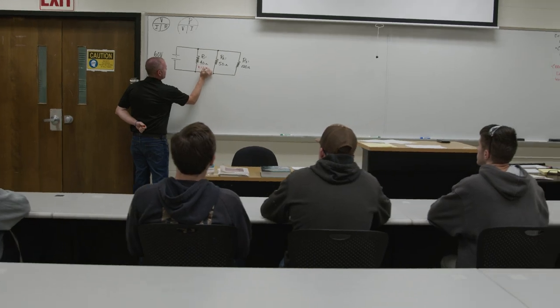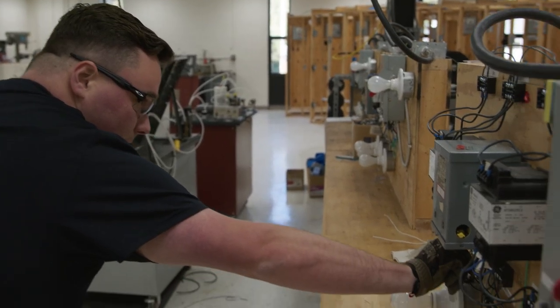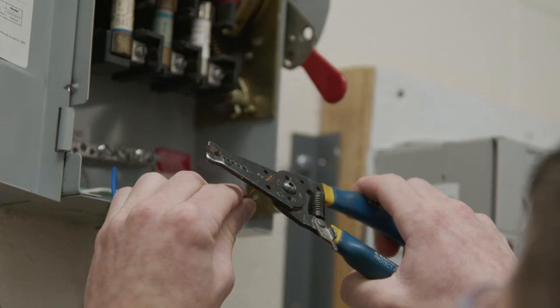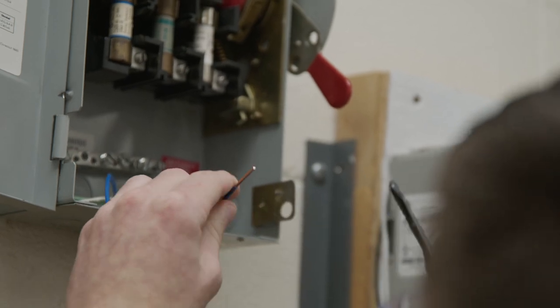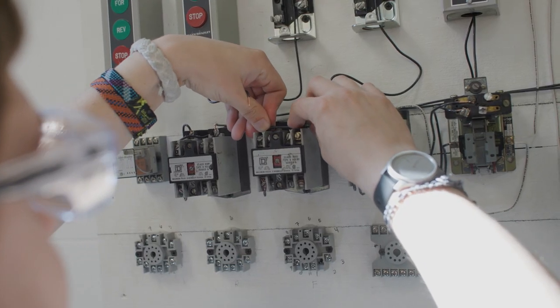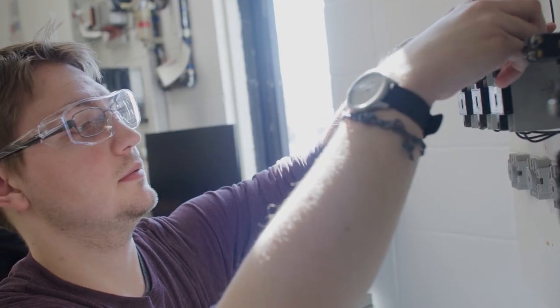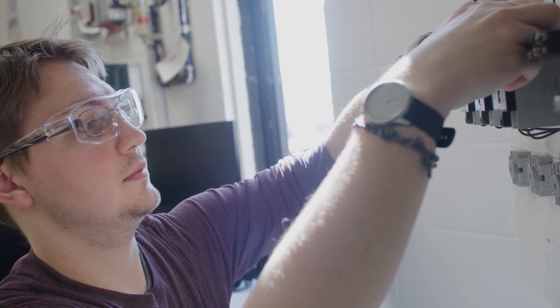Laboratory and classroom instruction includes topics such as blueprint reading, motor controls, and residential wiring. Construction electricity concentrates on residential electrical construction, and industrial electricity on industrial electrical construction.